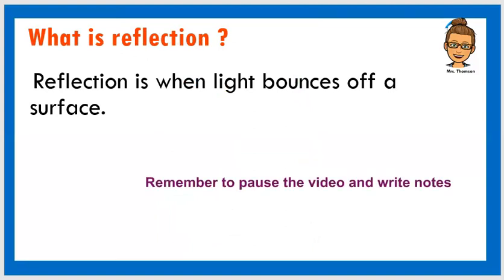What is reflection? Well, reflection is when light bounces off a surface. Now we know, we had discussed earlier that light bounces, for us to see something, light has to bounce off that surface and get to our eye for us to be able to see.